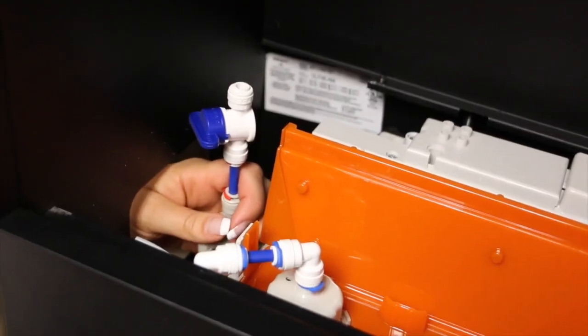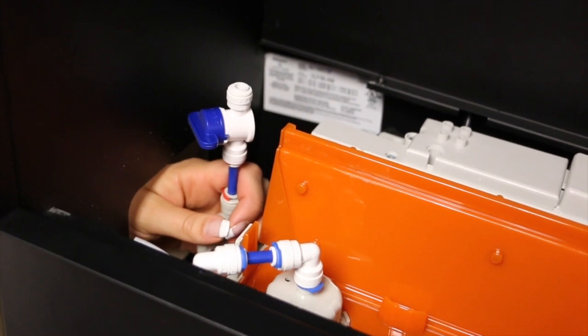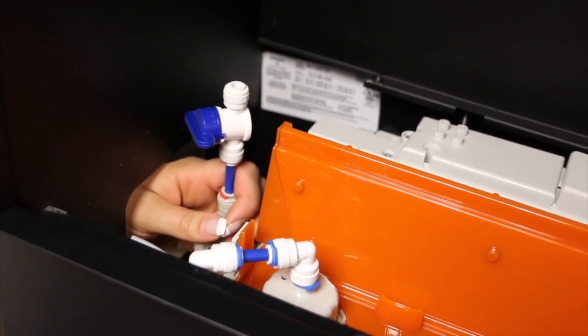Connect the water line reduced to quarter inch tubing to the main valve located in the bottom left side of the unit.